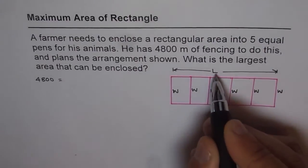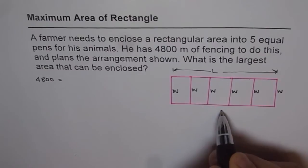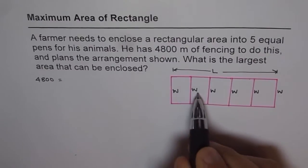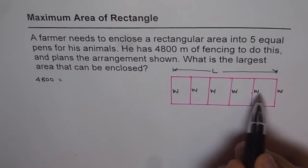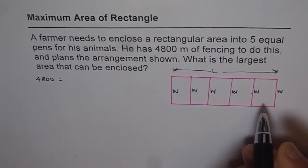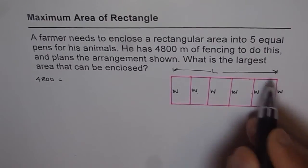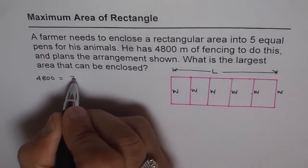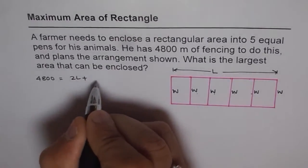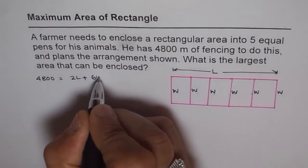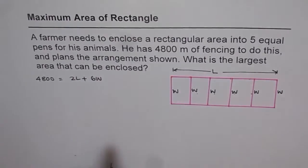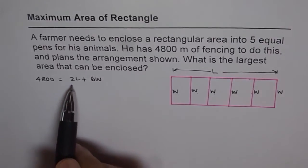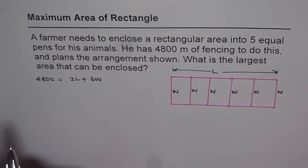So we have L on top, L on the bottom, and counting the vertical divisions: 1, 2, 3, 4, 5, 6 widths of W. So the total fencing is 2L plus 6W, giving us the equation 4800 equals 2L plus 6W.